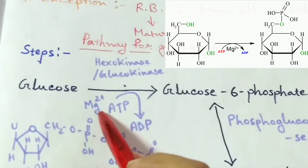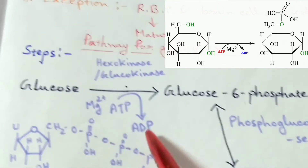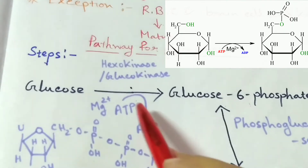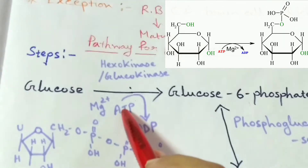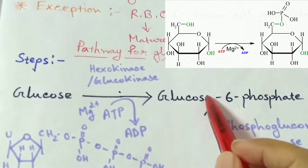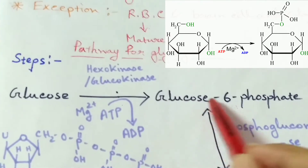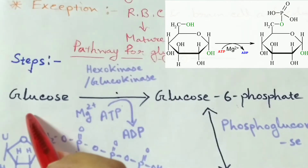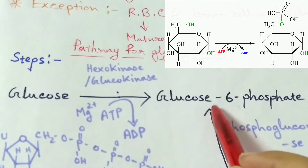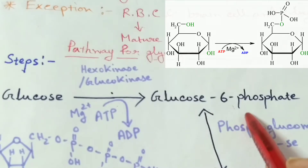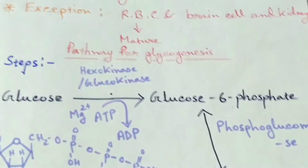ATP is converted into ADP by transferring one phosphate group at the 6th position of glucose. So, glucose is converted into glucose-6-phosphate.